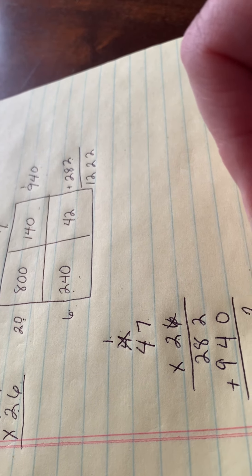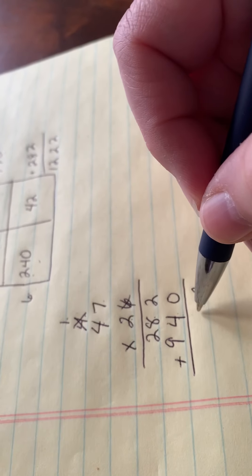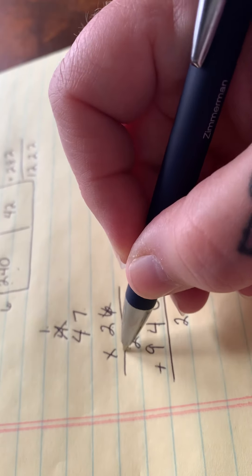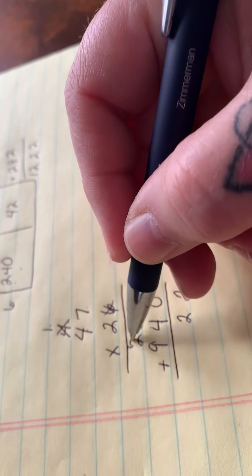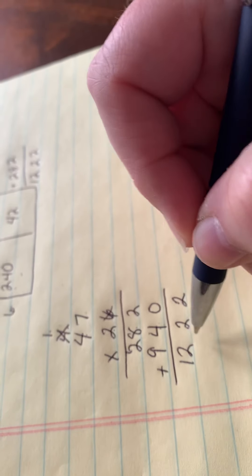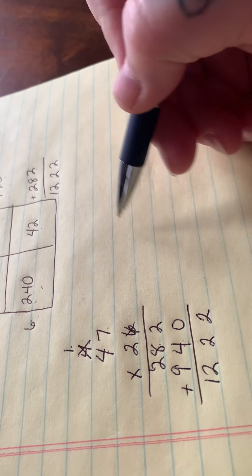2 plus 0 is 2. 8 plus 4 is 12, carry your 1. 9 plus 1 is 10 plus 2 is 12. I believe we have the same answers.